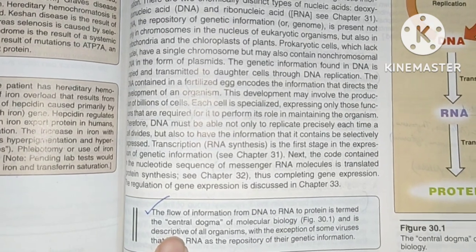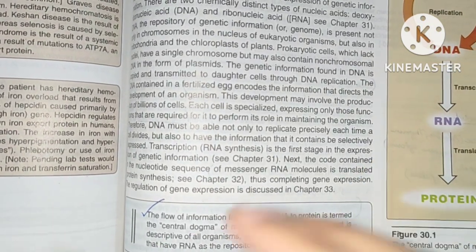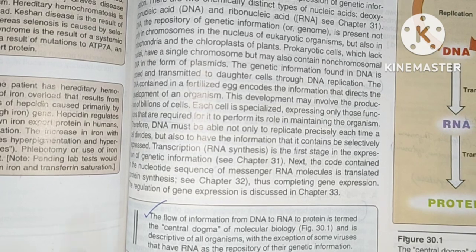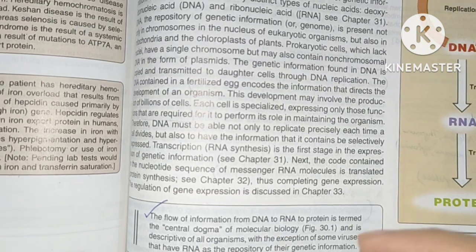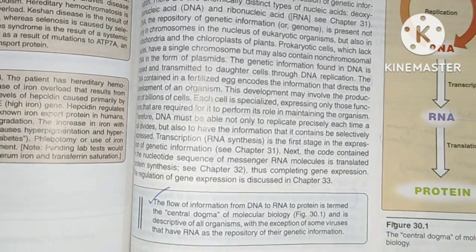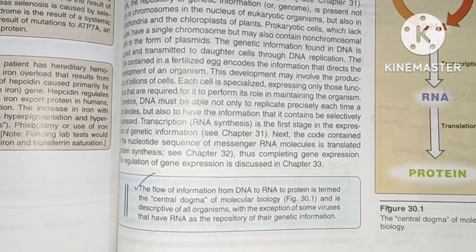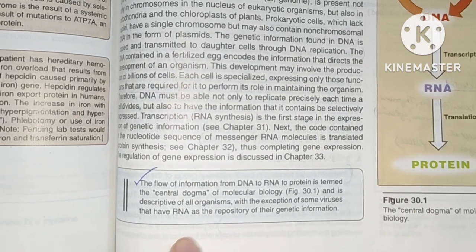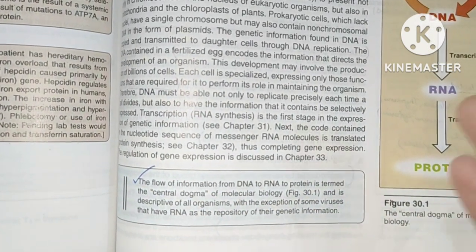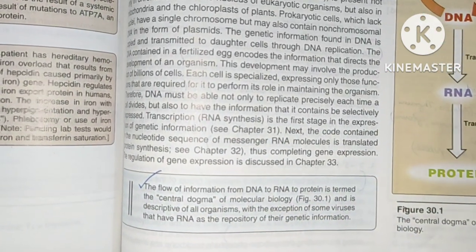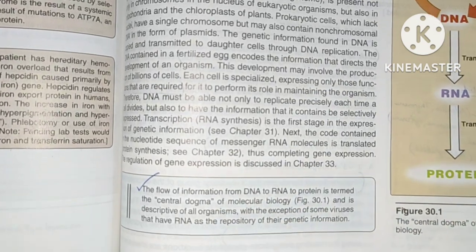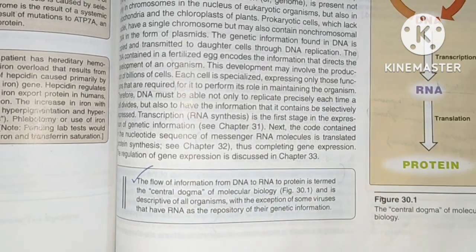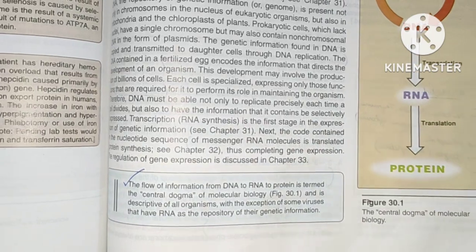Genetic information flows through transcription and translation — we call this process the central dogma. The central dogma describes the flow of information: DNA to DNA (replication), DNA to RNA (transcription), and RNA to protein (translation). We call this the flow of the central dogma.